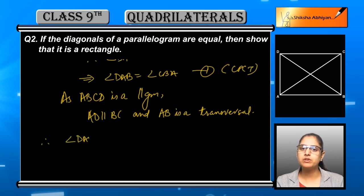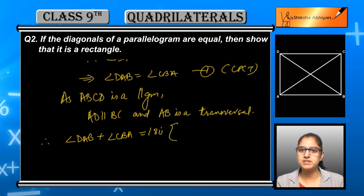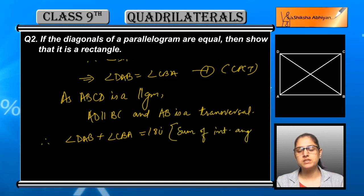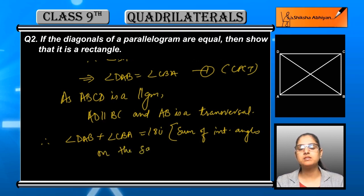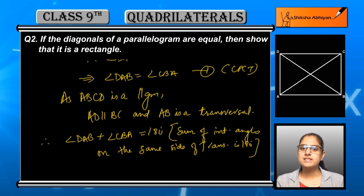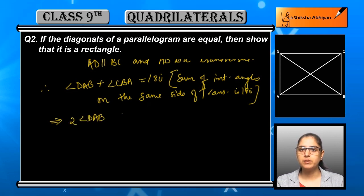We can say that AD is parallel to BC because opposite sides are parallel, and AB is a transversal. Therefore, angle DAB plus angle CBA is equal to 180 degrees, since co-interior angles formed by a transversal with parallel lines are supplementary.